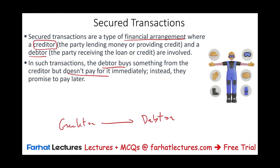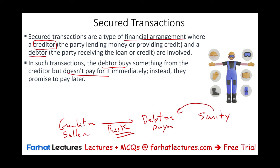Therefore, the creditor — think of the seller — has risk. Risk that the debtor doesn't pay their money later. They promised to pay later, but they don't. We learned in the prior session what the creditor can do. The creditor can ask for a surety — basically another person or entity that guarantees the debtor will pay, so if the debtor doesn't pay, someone else will.